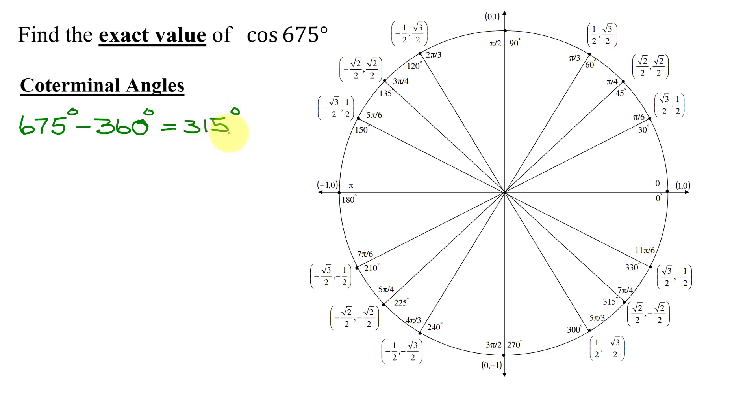Now, is 315 degrees on my unit circle? Yes, it's right over here. So I know that the cosine of 675 degrees equals the cosine of its coterminal angle, 315 degrees. As a specific trig function of coterminal angles are always equal. Now, I need to use the unit circle to find the cosine of 315 degrees.